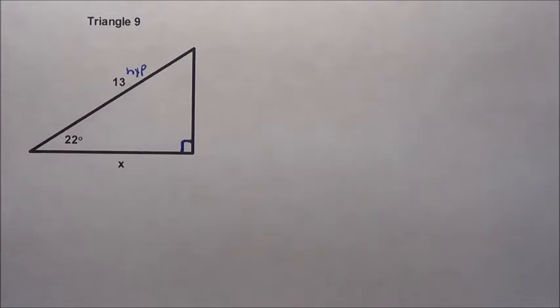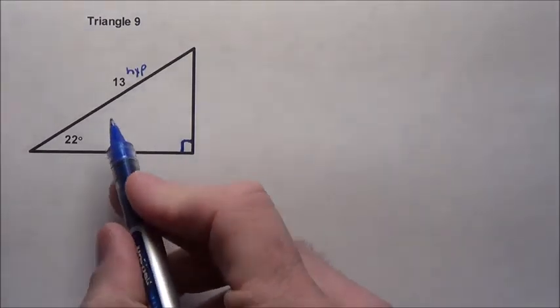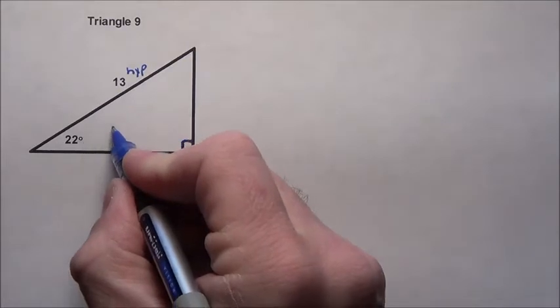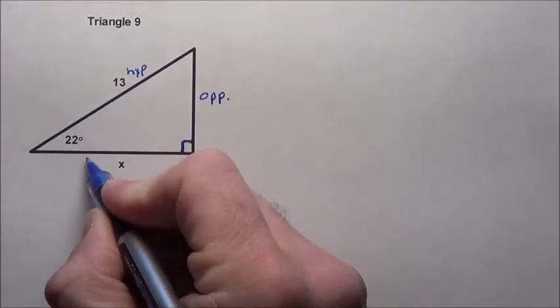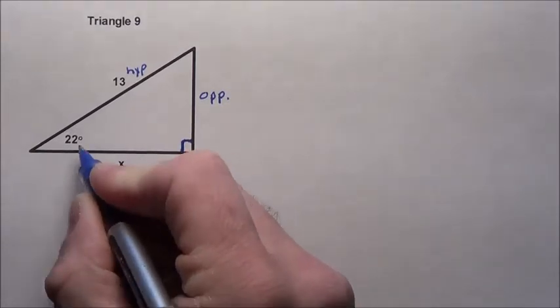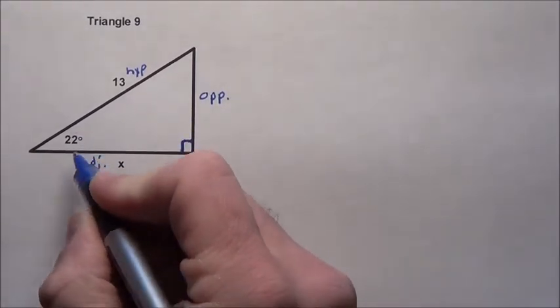Now adjacent and opposite sides depend on where the angle is given. In this case, the angle is 22 degrees. Across from it is our opposite side, and the side forming the angle with the hypotenuse is the adjacent.